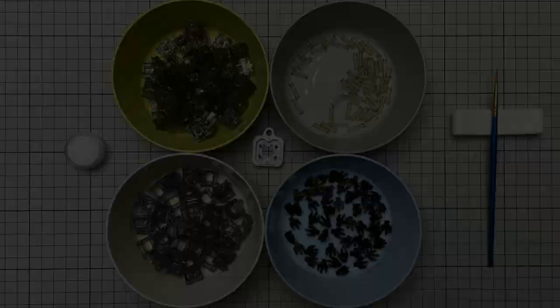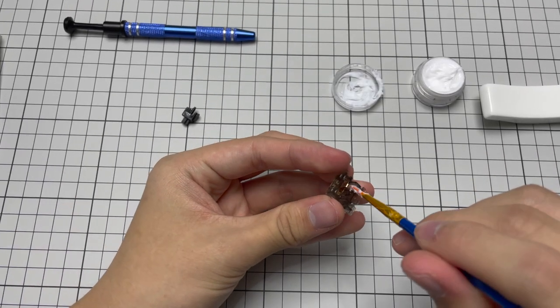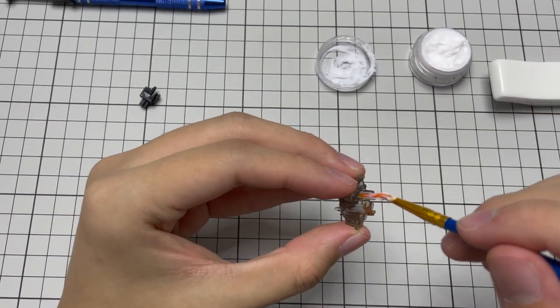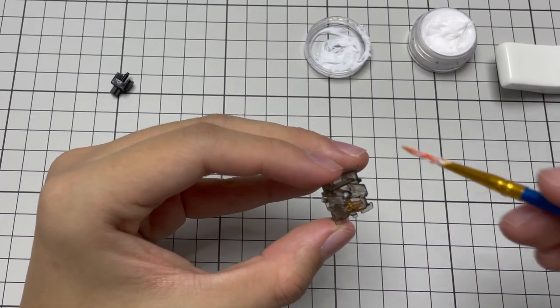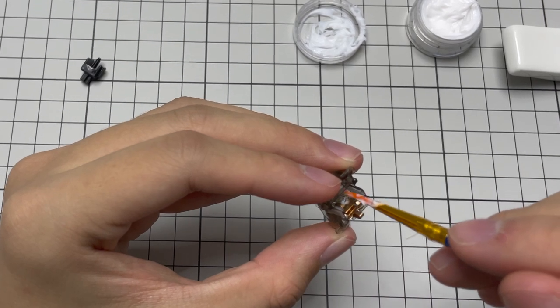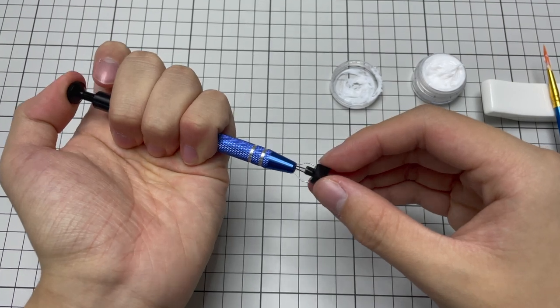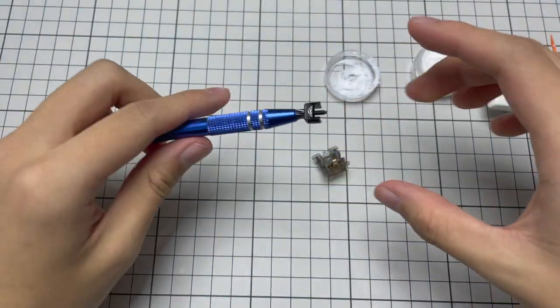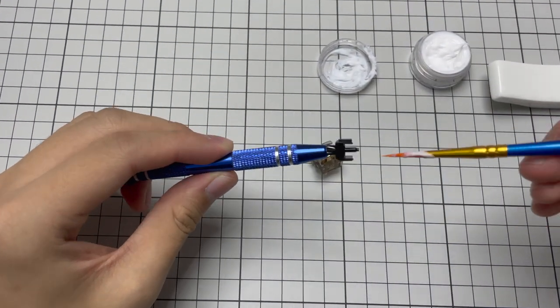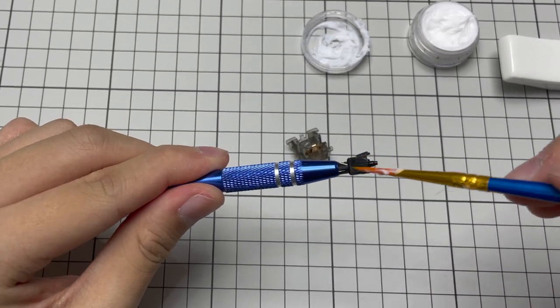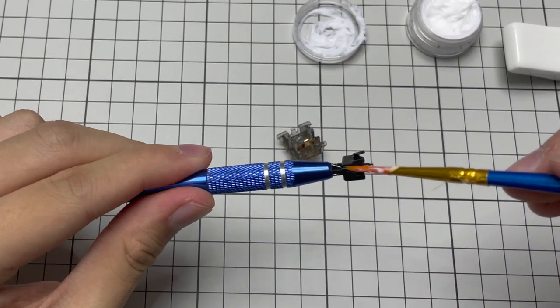Once that is done, I can finally start lubing the switches. I grabbed a paintbrush and dip it in a thick lube called Krytox 205G0, then apply it evenly to all the contact points within the switch. For lubing the stem of the switch, I got this holder which is more helpful than it seems. It helps hold tiny objects such as the stem of the switch while you lube them. For linear switches, you can lube the legs of the stem, but for tactile and clicky switches, I recommend that you avoid lubing them because they will lose their tactility.